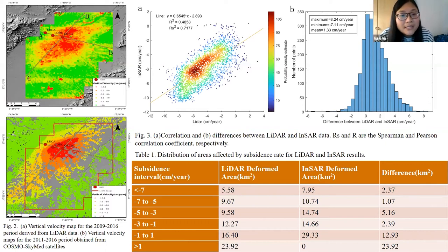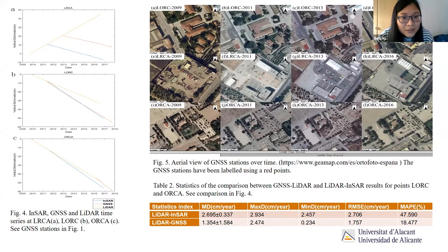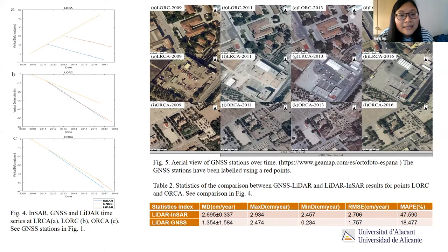We use a covariance-based approach to analyze the distribution of error affected by subsidence rate for LIDAR and InSAR results. This shows a comparison between LIDAR and GNSS at ten time series at the GNSS stations. Notice here the trend is opposite. This is because during 2009 and 2011, new buildings were built. But InSAR and GNSS data is from 2011, so it's reasonable that their trend is opposite.